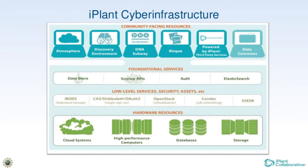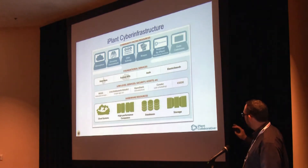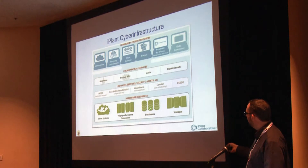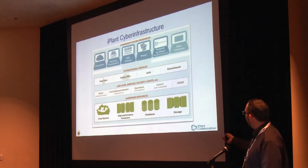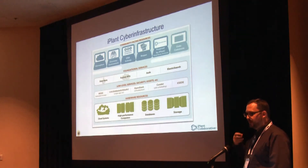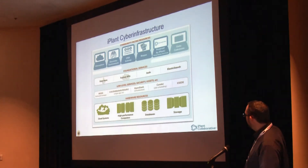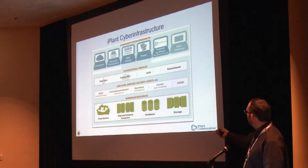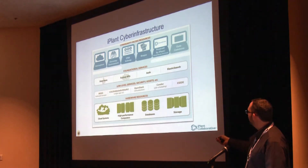This is a block diagram of iPlant — an orienting roadmap so that as you hear various products, services, and concepts through the next series of talks, you'll know where these fit. Down at the bottom is all of the hardware resources — computing, storage, disk, and cloud system. The intermediate layers are middleware: generally open source projects that we've connected, integrated, and abstracted away so that they're usable by people who have better things to do than deal with OpenStack, Condor, and iRODS. Sitting on top of those are foundational services — things like the iPlant data store, science APIs, authentication, search, et cetera.